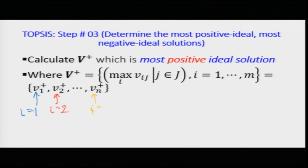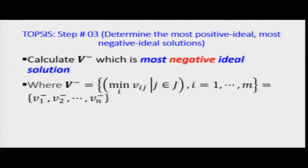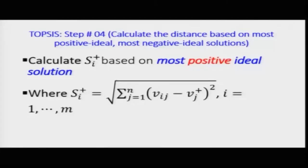Similarly, V minus — the negative ideal solution — is found by taking the minimum values. So we have the maximum corresponding to the ideal set and the minimum corresponding to the non-ideal set, considering only the first and third columns. We then find the distance function: each cell value in matrix V (of size m×n) gives a point in the coordinate system with respect to each criterion and alternative.